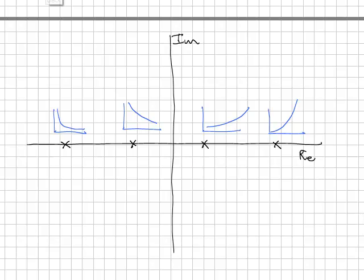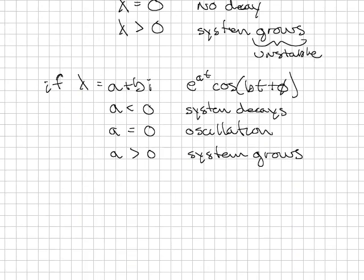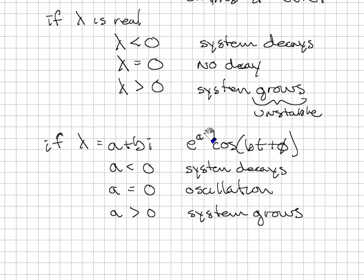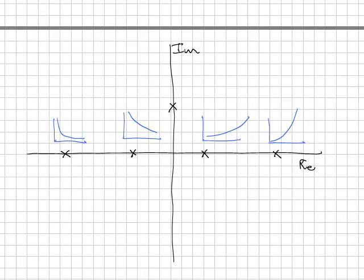Now let's look and see what happens when we have pure imaginary parts. If we have a system right here, then the solution is going to be e to the 0t, that's 1, cosine of bt. So there's no decay, all we have is pure oscillation. So it looks something like this. And as we go for larger imaginary values, we have a faster oscillation.